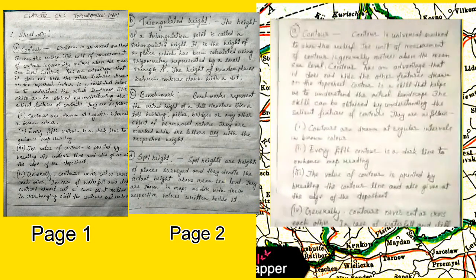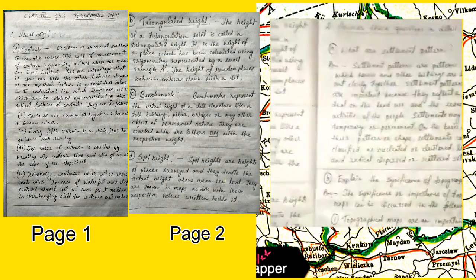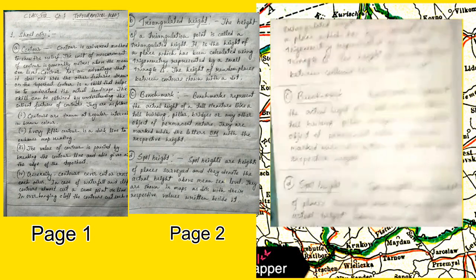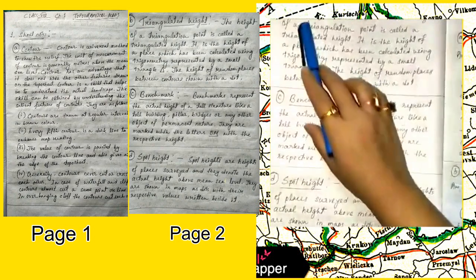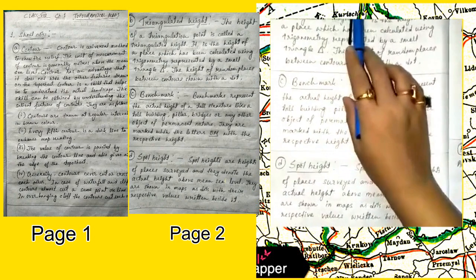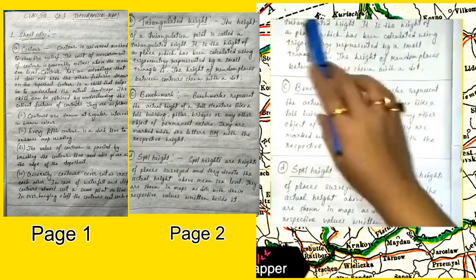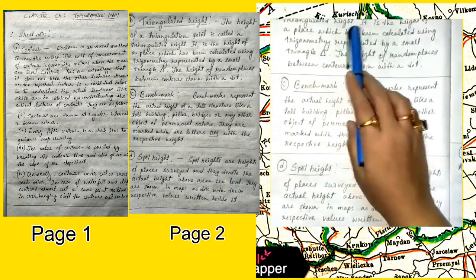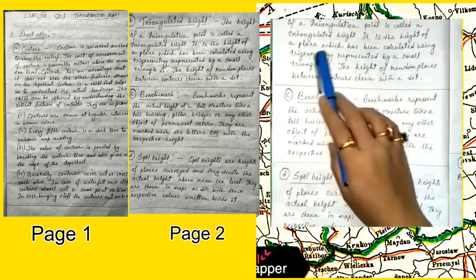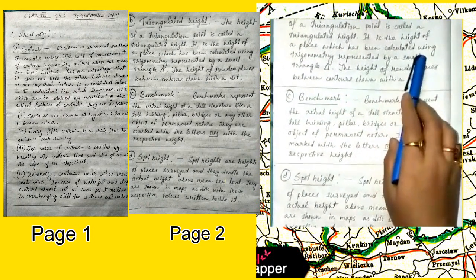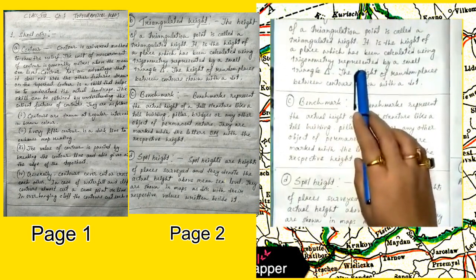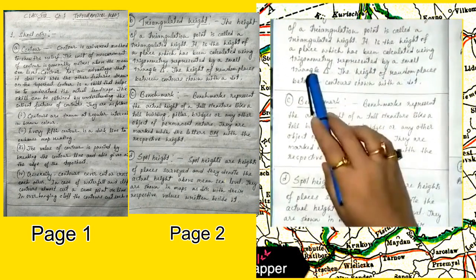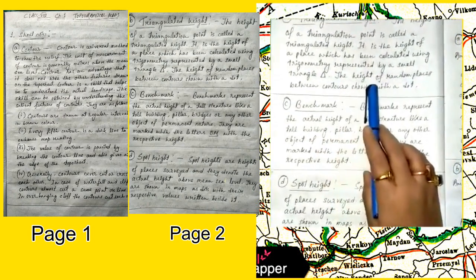Number B: Triangulated Height. The height of a triangulation point is called a triangulated height. It is the height of a place which has been calculated using trigonometry, represented by a small triangle. The height of random places between contours is shown with a dot.